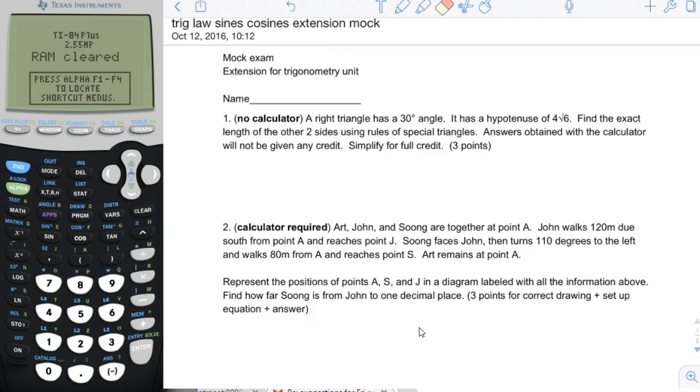The first problem is a non-calculator problem. You are going to draw a picture of a right triangle with a 30-degree angle. If one of the angles is 30 degrees, that means the second angle that's not 90 degrees is going to be 60 degrees, because the three angles of a triangle add up to 180.